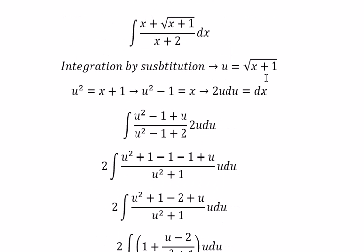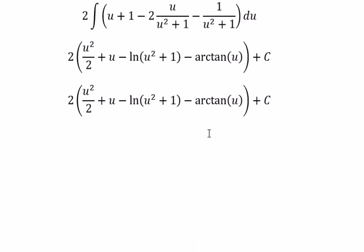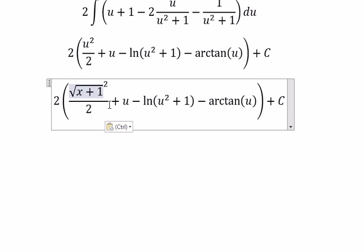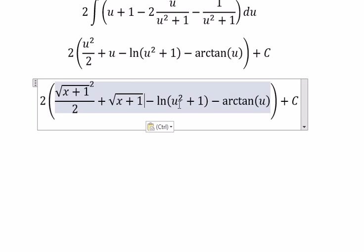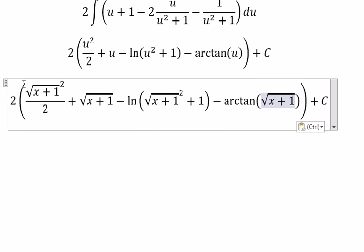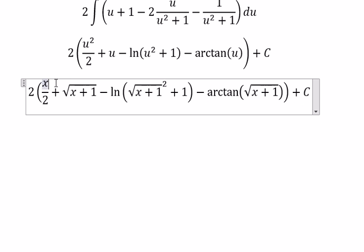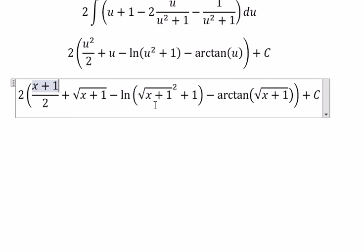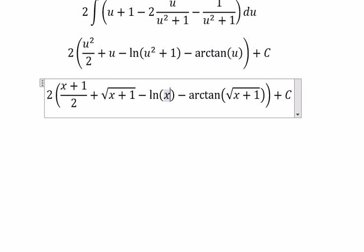And the last one is about u equals square root of x plus 1. You put in here, here, here, and here. This one you got about x plus 1. This one you got about x plus 1. We have number 1 in here. So you got about x plus 2.